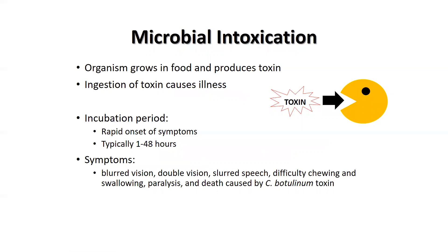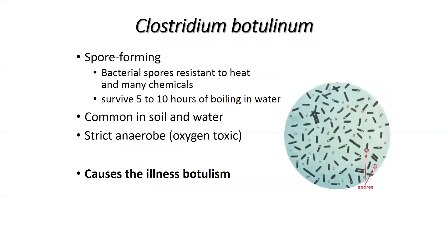It can grow in canned food that has not been properly processed. The spores of Clostridium botulinum are very stable and resistant to inactivation by boiling water and other chemicals. Clostridium botulinum is a common soil microorganism and can be present naturally on foods. The bacteria is a strict anaerobic, meaning oxygen is toxic, and the bacteria will not grow on most foods due to oxygen exposure.